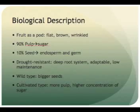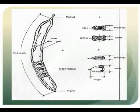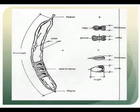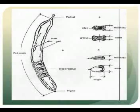Researchers have found that cultivated carob pods have more pulp with a higher concentration of sugar than wild type carob. This is likely due to the fact that sweeter pulp has been selected for.